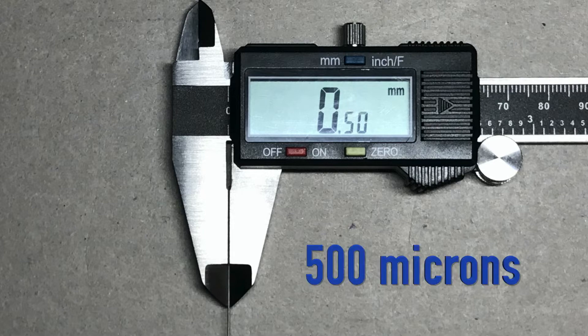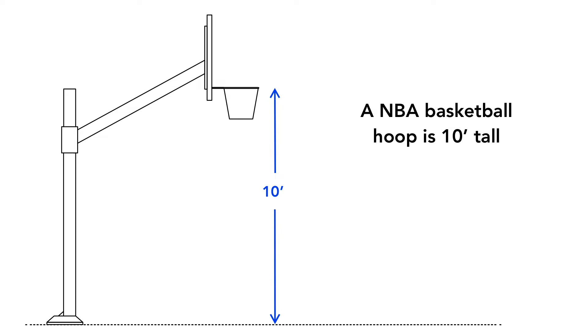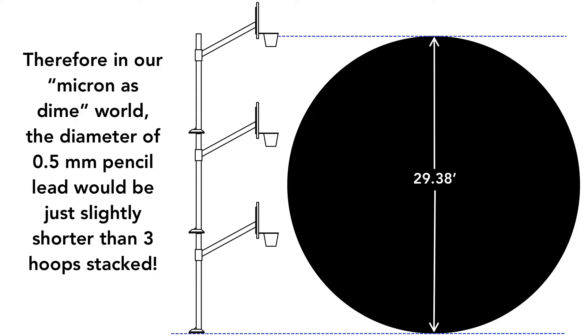0.5 millimeters is 500 microns. An NBA basketball goal is 10 feet high; therefore, in our micron-as-a-dime world, 0.5 millimeter pencil lead would be just slightly shorter than three NBA hoops stacked on top of each other.